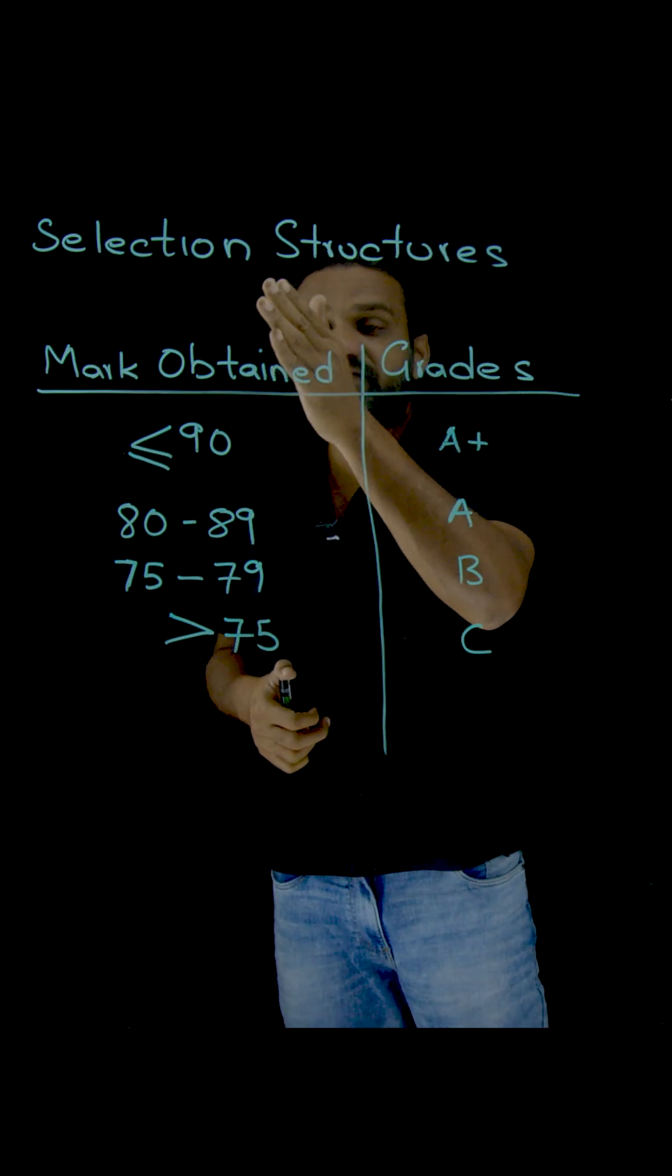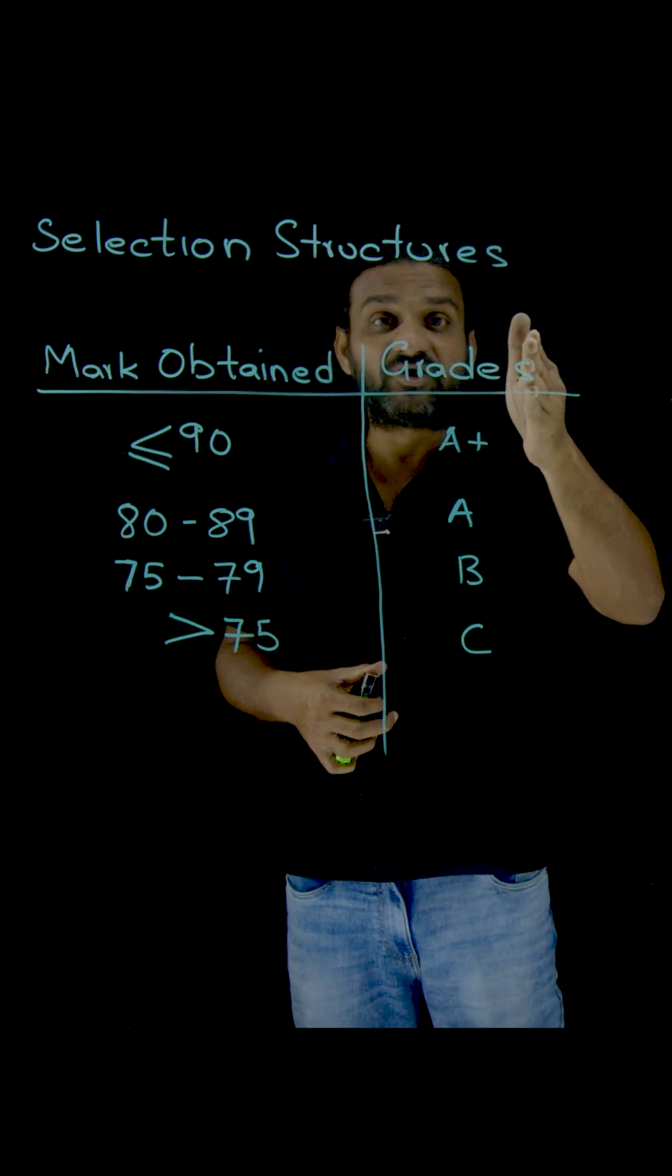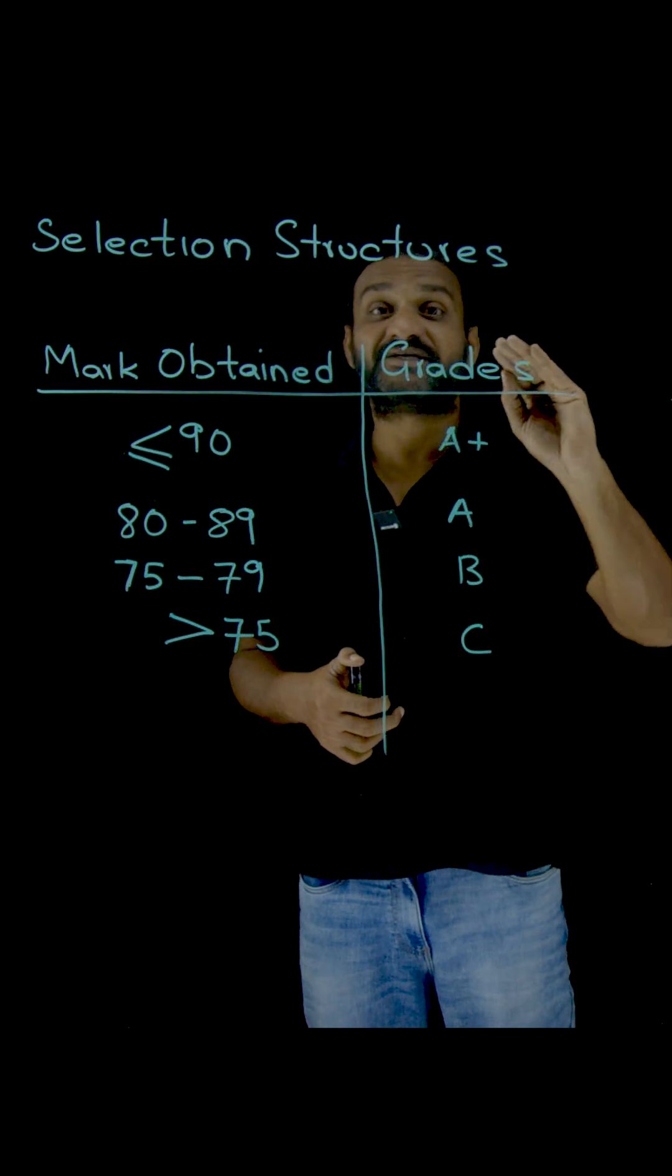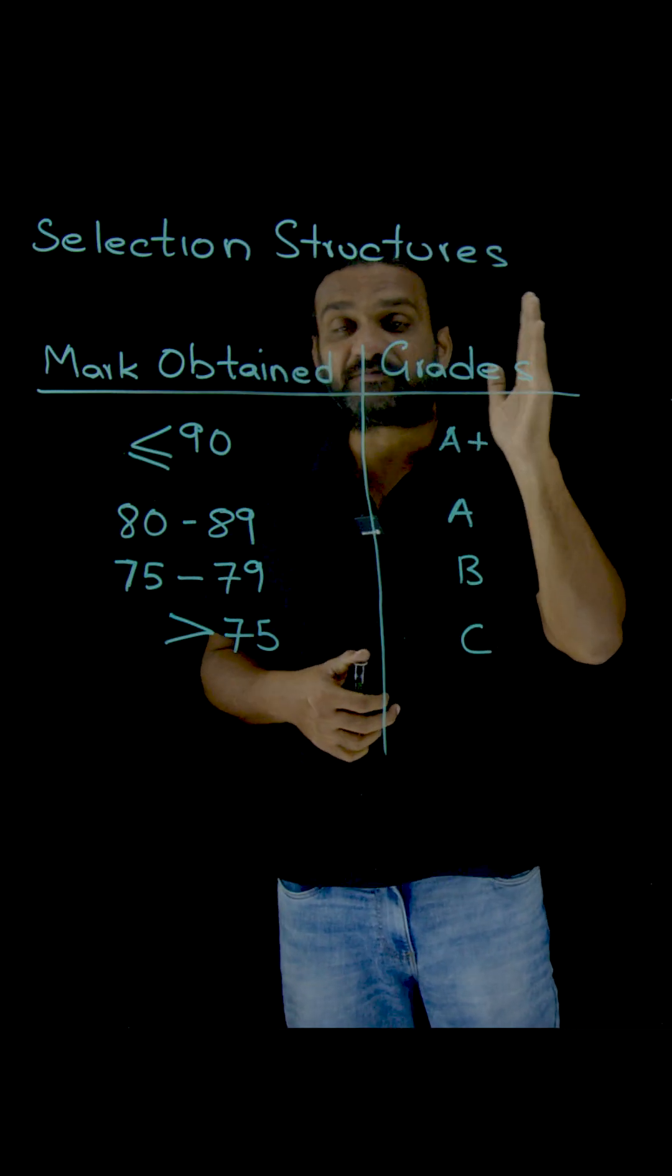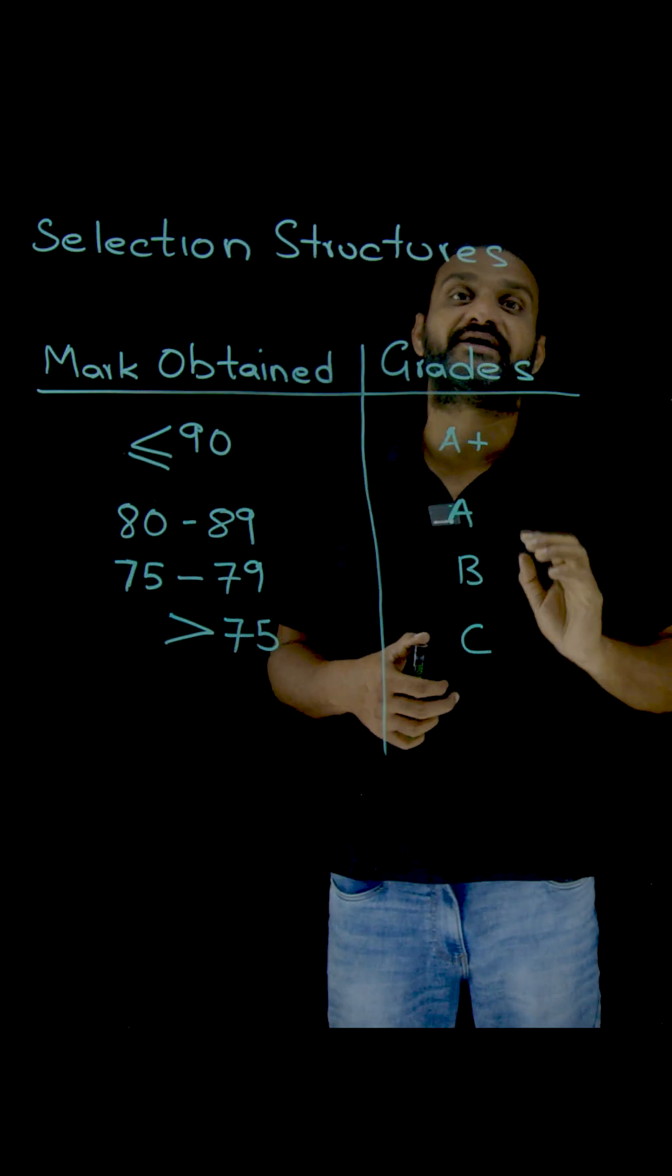So here we have the marks obtained by a student, and the second column shows the grades to be allocated for that student based upon the marks. Whatever marks are obtained by the student, based upon those marks, we have to allocate the corresponding grade.